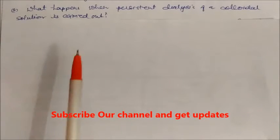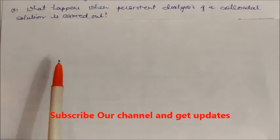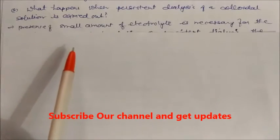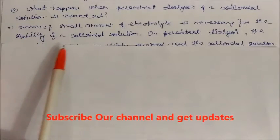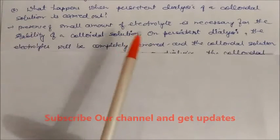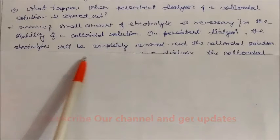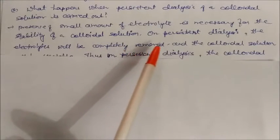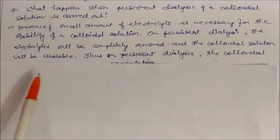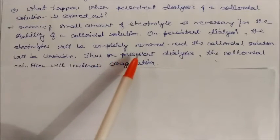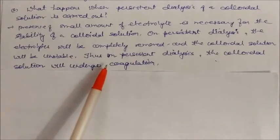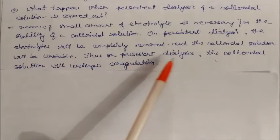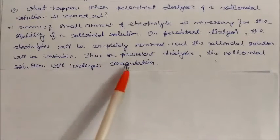What happens when persistent dialysis of a colloidal solution is carried out? During dialysis, presence of small amount of electrolyte is necessary for the stability of colloidal solution. On persistent dialysis, the electrolyte will be completely removed and the colloidal solution will be unstable, thus undergoing coagulation.